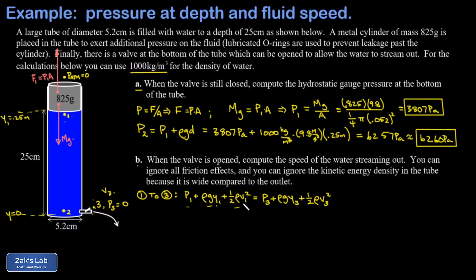The kinetic energy density at the top of the tube we were told we could approximate away, so the tube is large compared to the valve, so the fluid velocity is so small we don't have to worry about the kinetic energy part.